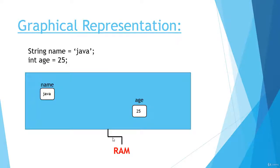Now look at this graphical representation. You will have a better concept when you understand this graphical representation. The blue box on your screen — let's suppose this is the RAM of your computer. Above this box you can see two lines. In these two lines we have declared two variables. Look at the first line: String name equals to java, then semicolon.